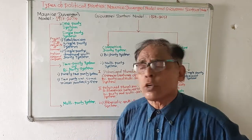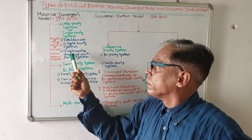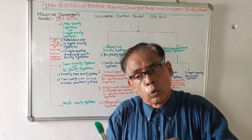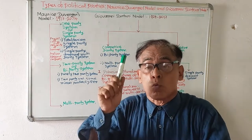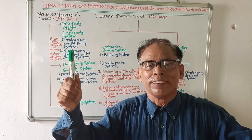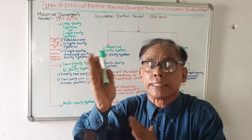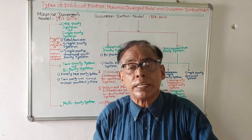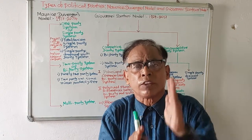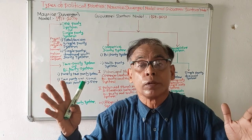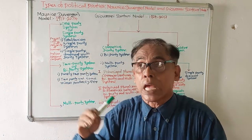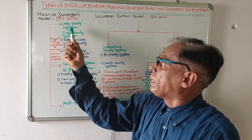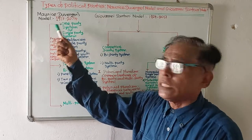Another category is the single party dominant multiple system. In this system, no doubt many political parties are found in a country, but one political party is very powerful and no other political party is able to challenge it. For example, the Indian National Congress, formed in 1885, was very powerful from 1947 to 1967, and no political party at that time was able to challenge it.